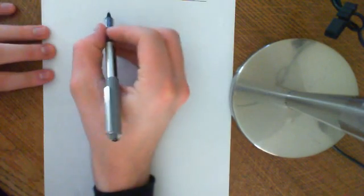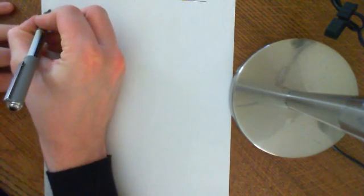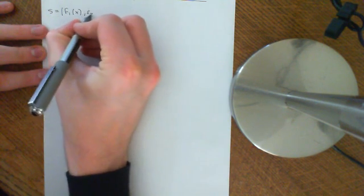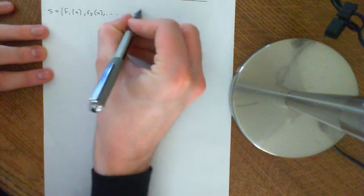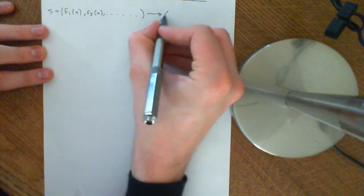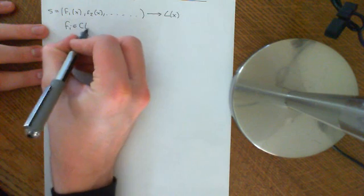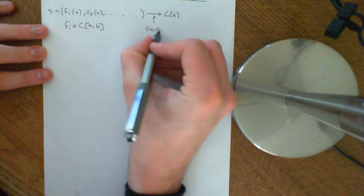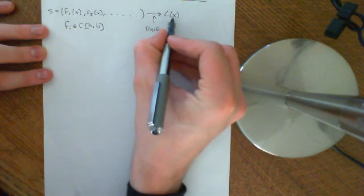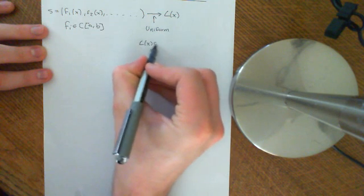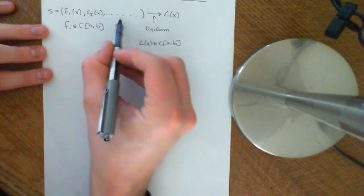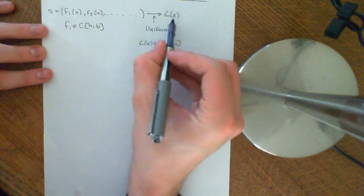So the theorem we're going to prove is that if you have a sequence S of continuous functions f1(x), f2(x), etc., and the sequence converges uniformly to some limit function L(x), and all the functions fi are elements of C(A,B), then this limit function L(x) has to be continuous — i.e., L(x) is also an element of C(A,B). You can't have a sequence of continuous functions which converges uniformly to a discontinuous function.